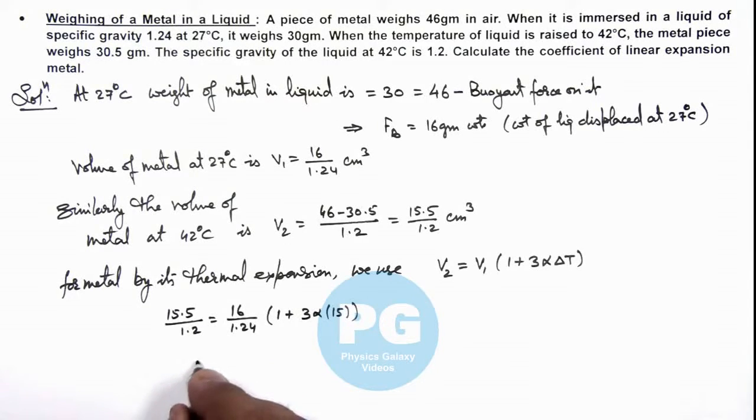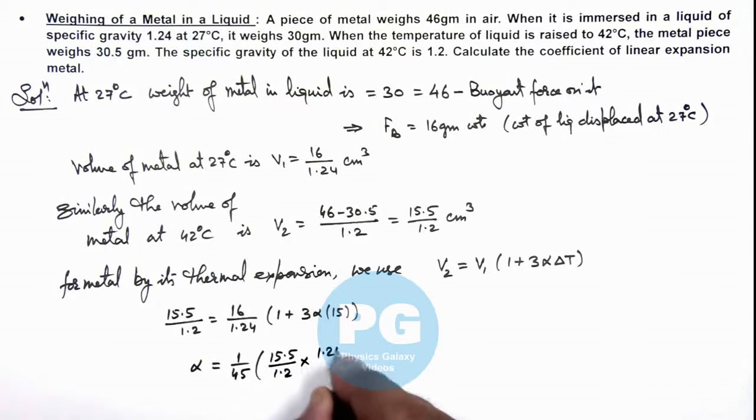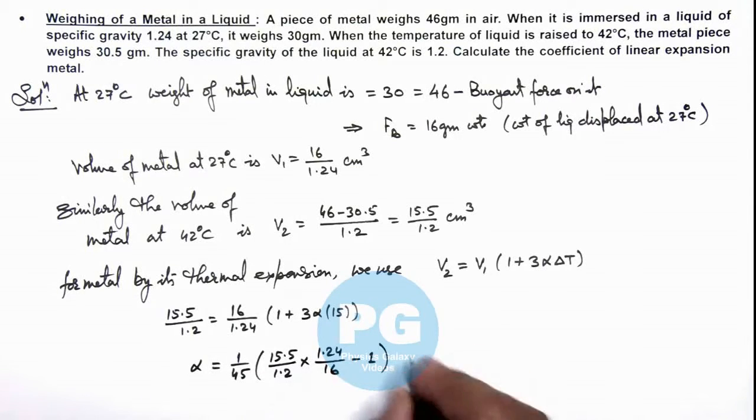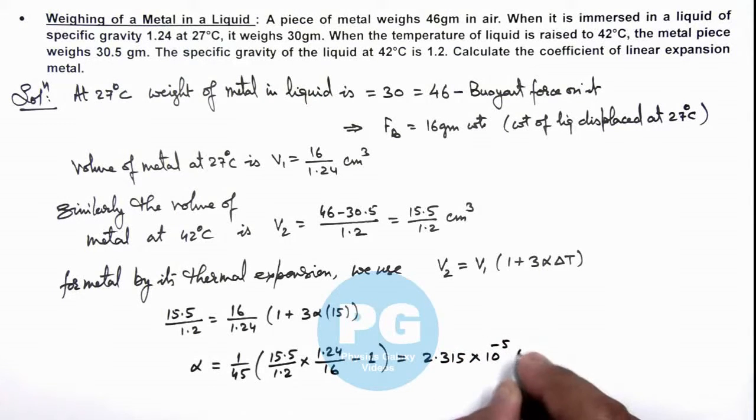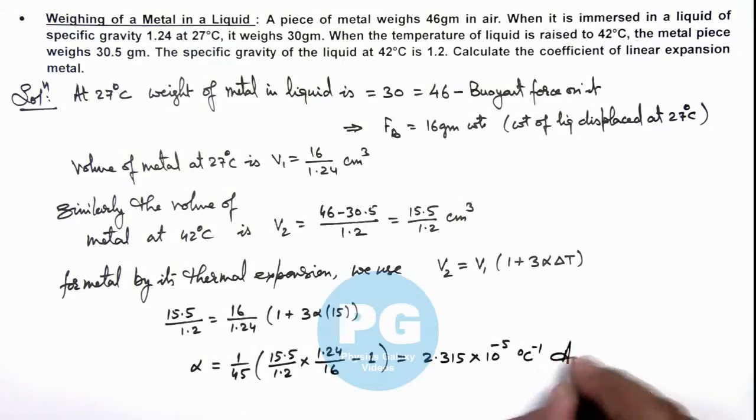So simplifying this, we get the value of alpha equal to 1 by 45 times 15.5 by 1.2 multiplied by 1.24 by 16 minus 1. Numerically this comes out as 2.315 into 10 to the power minus 5 per degree Celsius. That is the result of this problem.